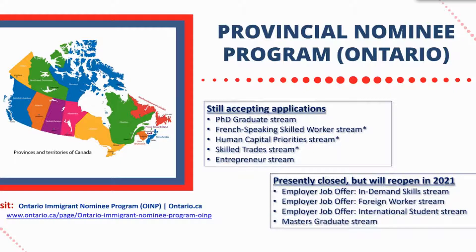These can all be found on the Ontario Immigrant Nominee Program website, which will be included in the chat. Ontario, along with other provinces, obtains a certain number of nomination certificates issued to clients to submit a permanent resident application. The quota for the closed programs has been met for 2020, so you have to wait until it refreshes. For those who meet the requirements of the closed ones, get all your documents prepared so that as soon as the portal opens, you can submit right away.